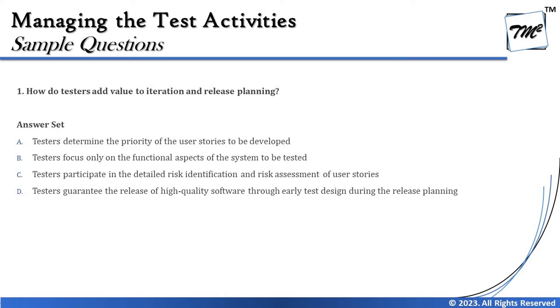Option B says testers focus only on functional aspects of the system to be tested. Agile doesn't deal only with functional — it deals with functional as well as non-functional. So whether it's writing user stories, planning, etc., it deals with both at the release level and the iteration level. So it's not limited to functional — this option is incorrect.